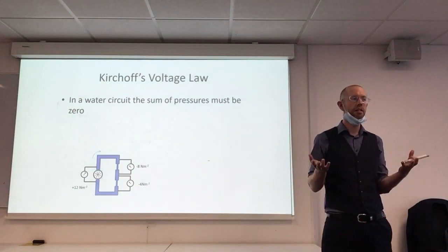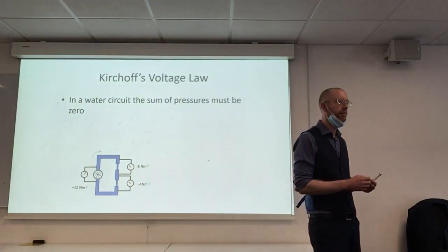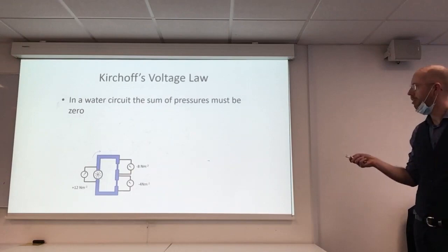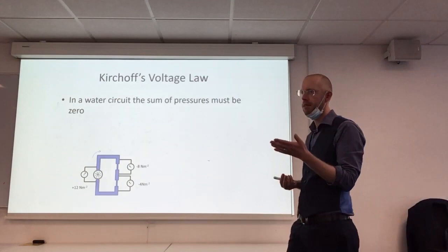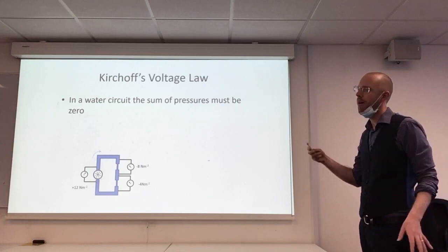We had a look at Kirchhoff's current law, which just said that the current flowing into a node is equal to the current flowing out of a node. It's based on the fact the current can't appear or disappear, so whatever flows into a branch must flow out of the branch. Kirchhoff's voltage law is related to voltages, but this doesn't apply to nodes. Voltages act between points, so it actually applies to loops.